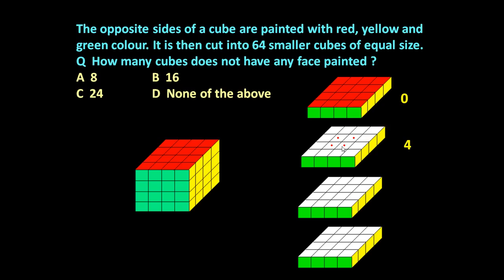But the central 4 cubes, they will not have any face painted. These are blank. They will not get any face painted either with green, yellow or red color. So this slice will produce 4 such cubes.